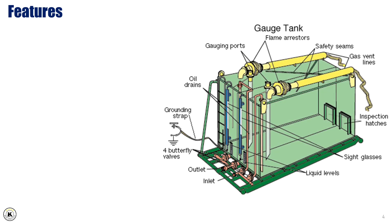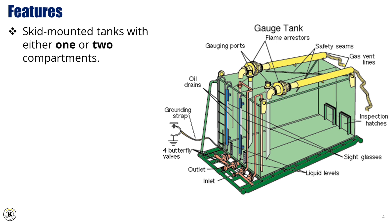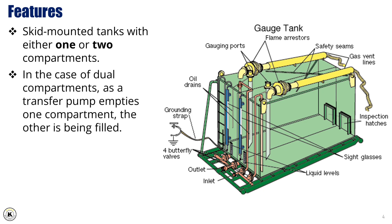Let's go over some of the key features of the atmospheric gauge tank. These tanks are skid-mounted for easy transport and setup, and they come with either one or two compartments. In the case of dual compartments, the operation is seamless — while one compartment is being emptied by the transfer pump, the other is being filled, allowing for continuous flow without interruption.